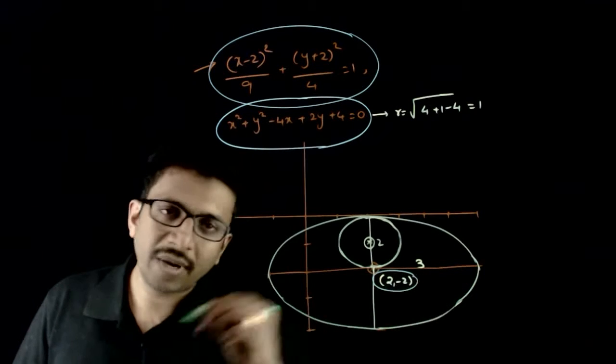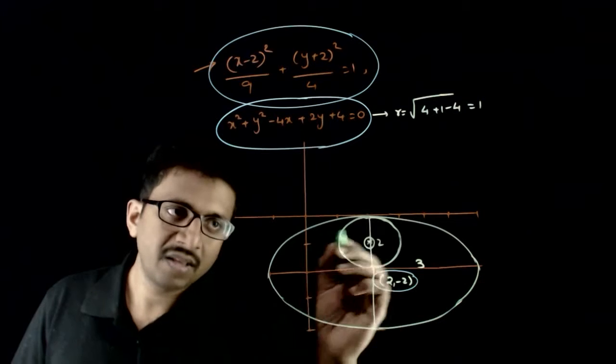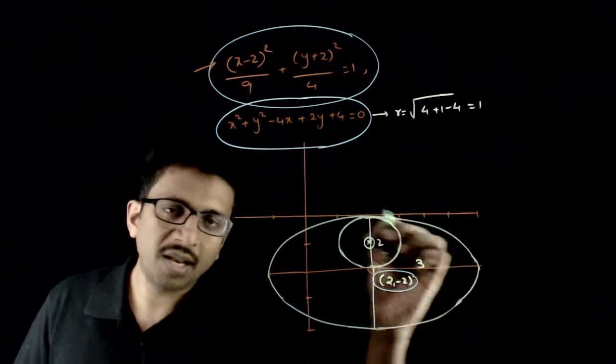Since the center is at (2, -2), if you go 2 units up, it will just touch the y-axis, so the ellipse will look like this.